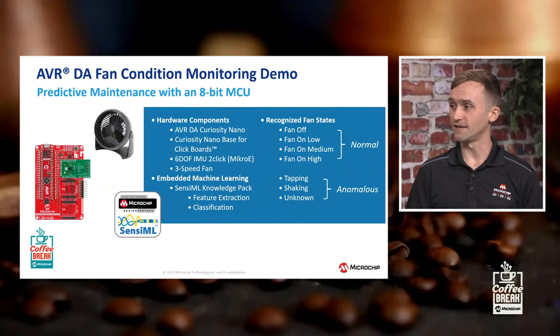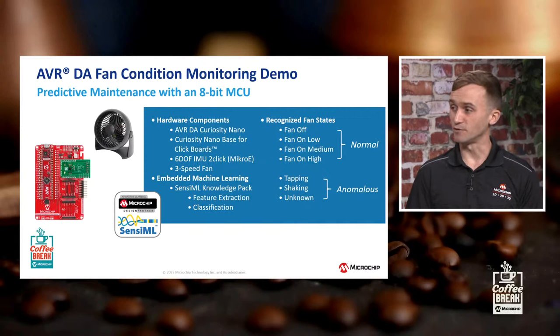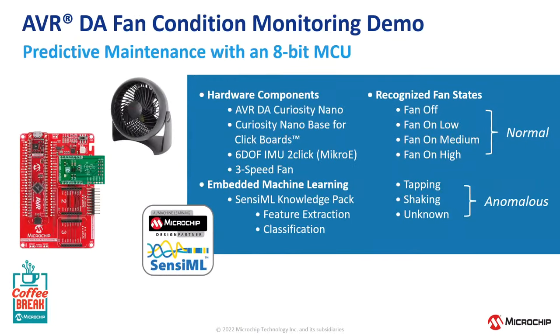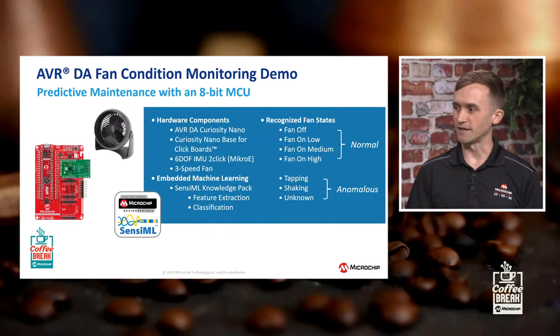The team has built a demo which highlights predictive maintenance for a fan. We're using the AVR DA Curiosity Nano development kit along with the Curiosity Nano base for click boards, allowing us to easily attach an IMU sensor — an accelerometer and gyroscope combo. We mount that whole kit on top of the case of a fan so we can monitor the vibration and movement to make an inference about the state it's in. We have a few different states that can be recognized: the normal operating states — off, low, medium, high — but we've also trained it to recognize anomalous states such as tapping on the case of the fan or shaking.